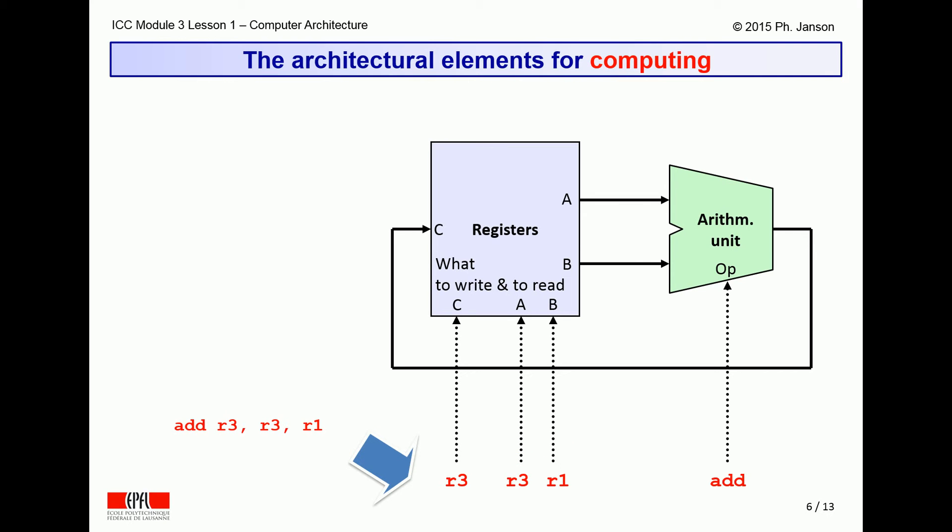First, it needs to inform the register bank that it wants to read R1 and R3. The register bank then supplies the value of R1 and R3 on its lines to the arithmetic unit.